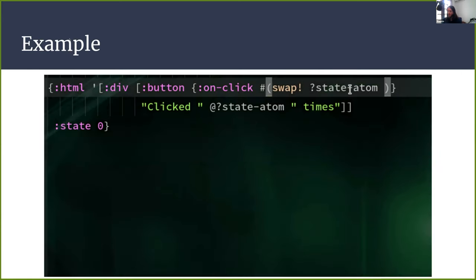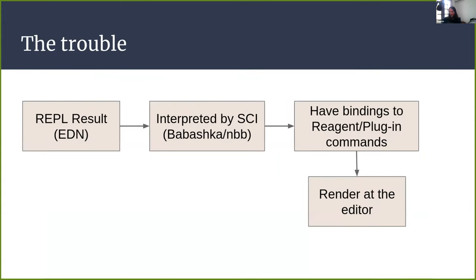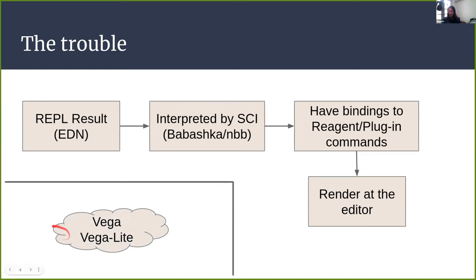But then it became a problem because Chlorine was originally not designed with that in mind. It's kind of like an afterthought that is slowly becoming first-class. A simple example of an interactive render is: you evaluate something that has HTML — more like a hiccup/Reagent thing — and you can get handlers and everything. Then things become complicated when you want to use external libraries like Vega or Vega-lite, because there's a wall: this is ClojureScript interpreted by SCI inside an editor, and Vega is JavaScript — it doesn't speak ClojureScript at all.